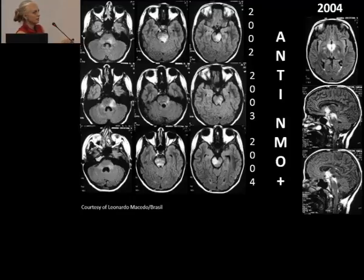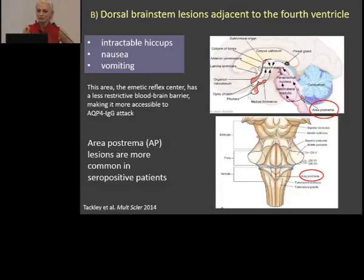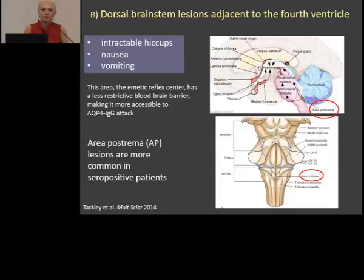Very typical also are lesions in the dorsal brainstem, very close to the fourth ventricle, in a place called the area postrema. This is specific because it is the emetic reflex center of the brain, and this part of the brain has less restricted blood-brain barrier. Interestingly, these patients present with very special symptoms: intractable hiccup, nausea, and vomiting. If a patient comes in with a hiccup they cannot control, maybe think this could be NMO and look at the area postrema.